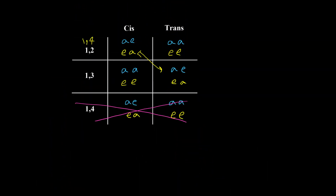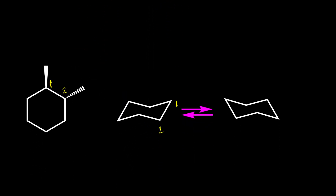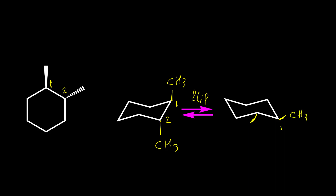For one and two, trans is axial-axial or equatorial-equatorial. So I can put both methyls on axial positions. For carbon two, the axial bond should be pointing down. This is one conformer, and when we have ring flip, then we place one CH3 on carbon one and another CH3 on carbon two on equatorial positions. So we have two different conformers.